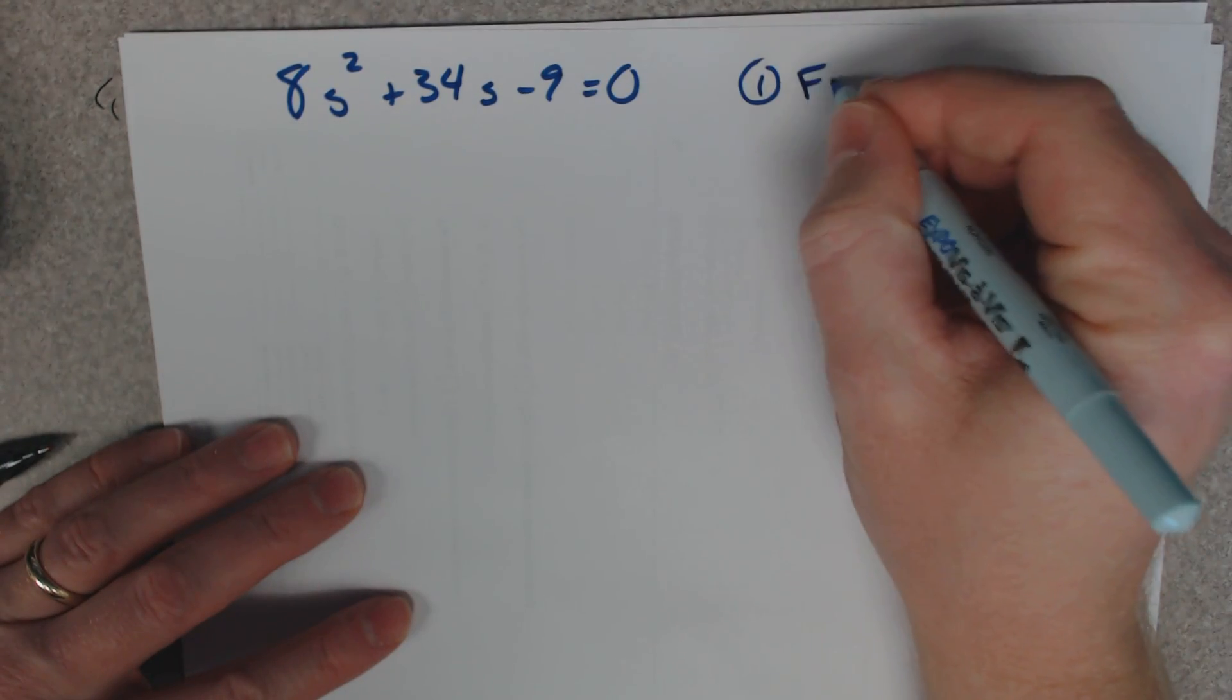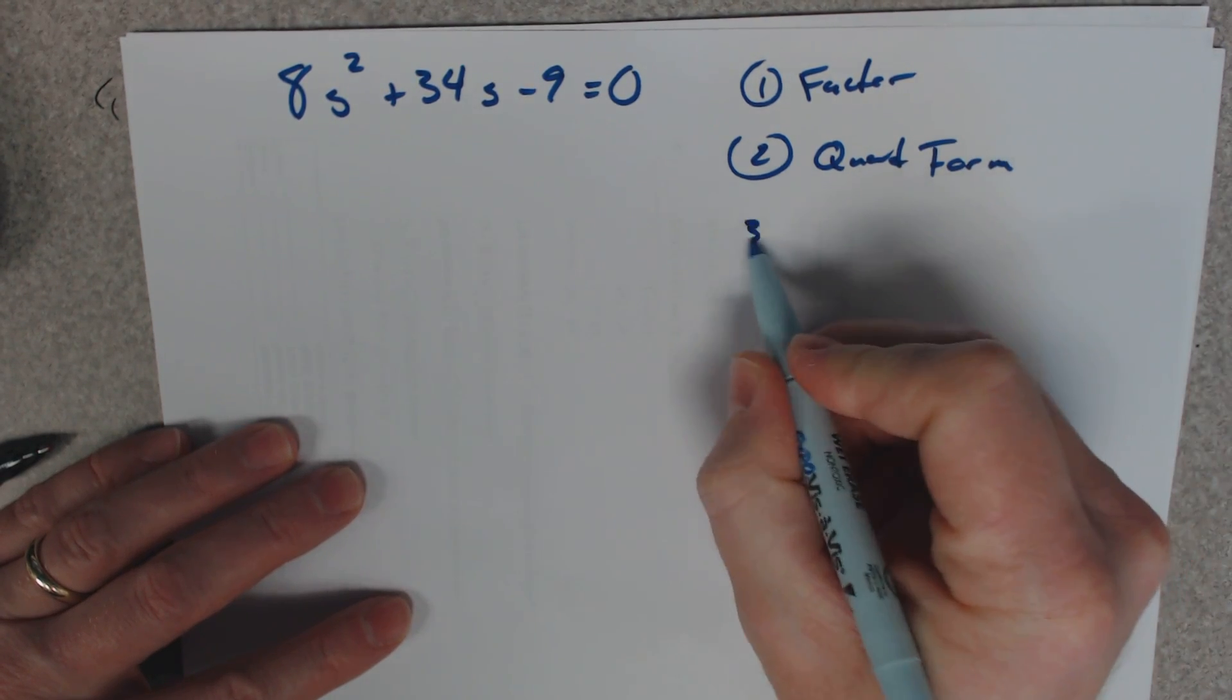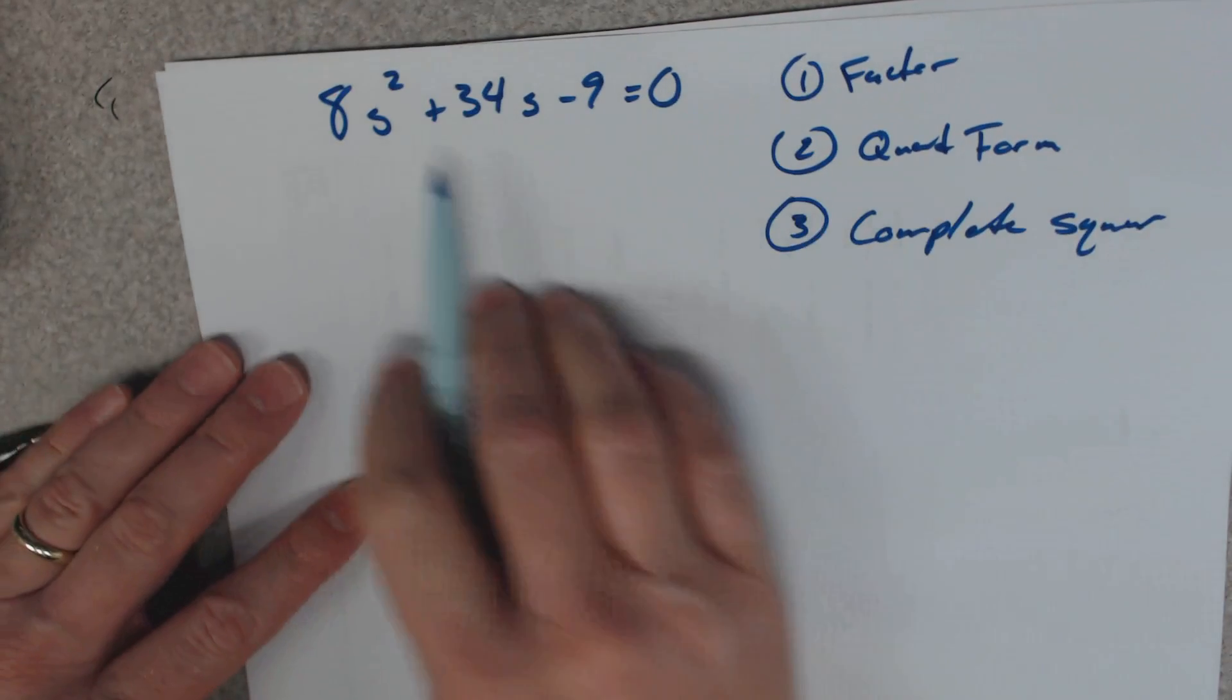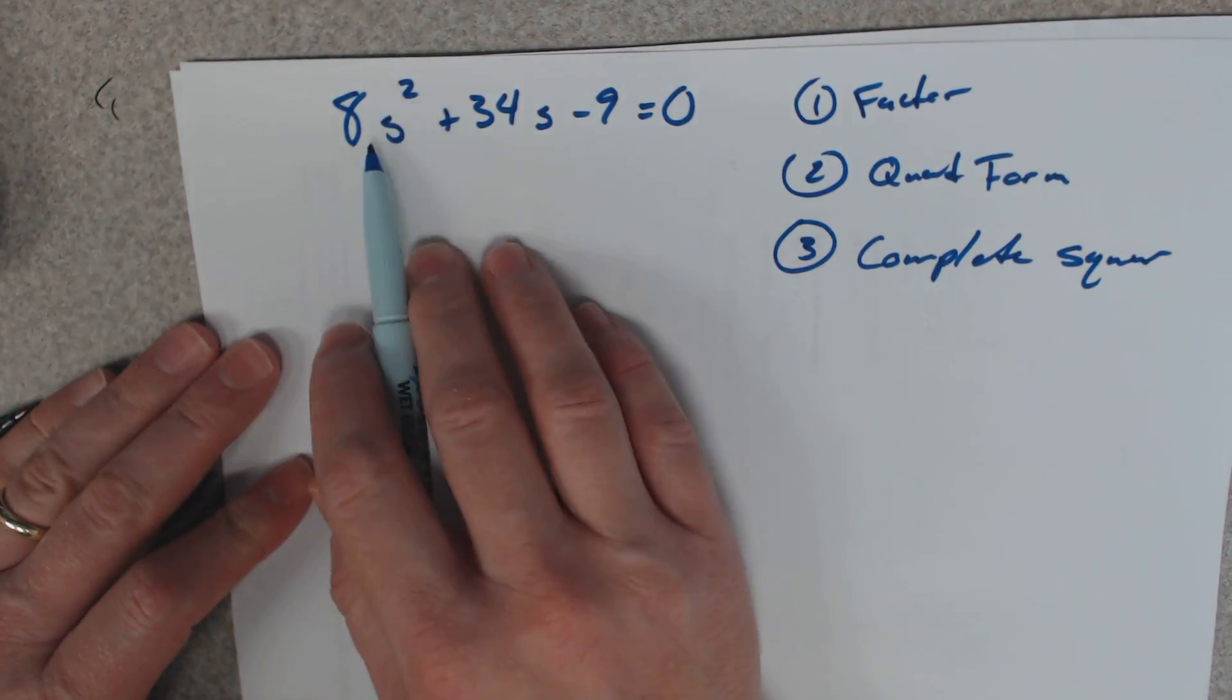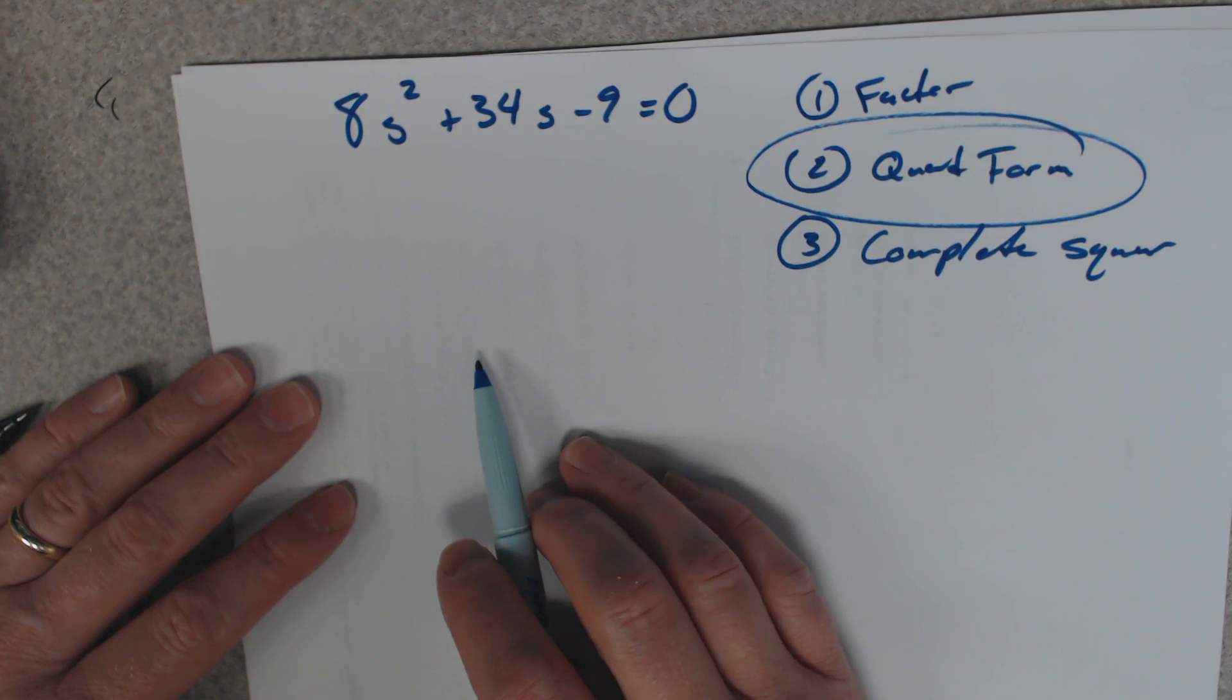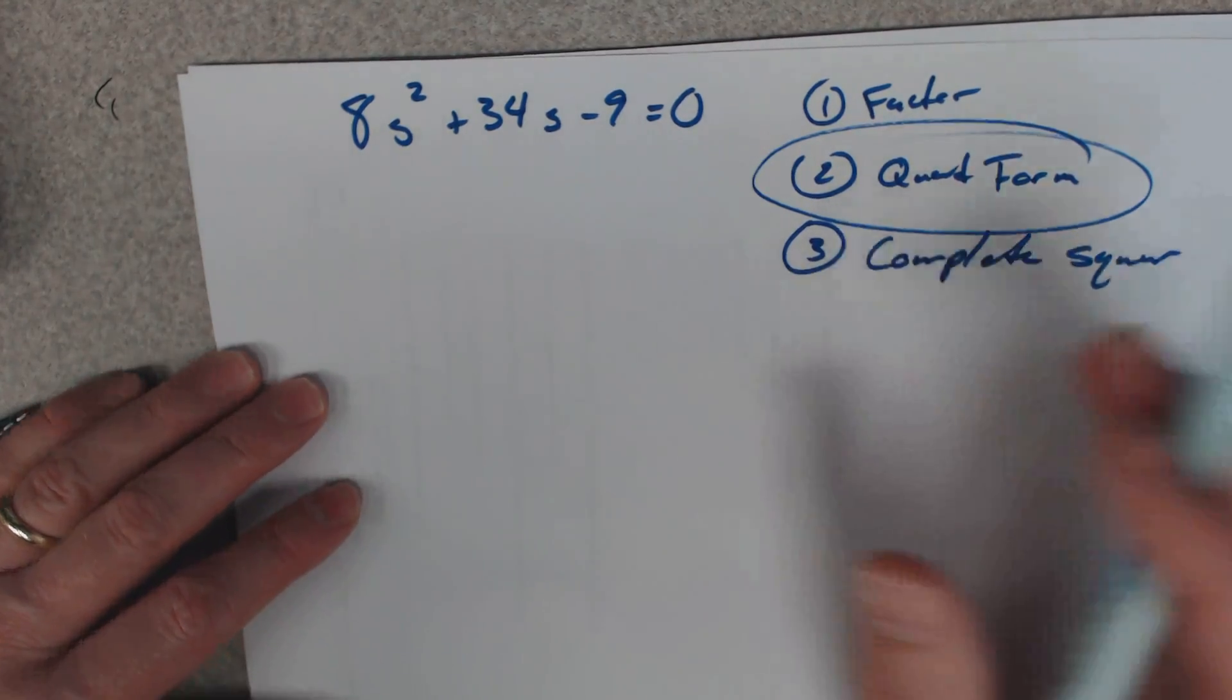One is to factor. Two is the quadratic formula. And three you can complete the square. For me, whenever I see there's a value out here in front of the x squared or the variable squared, I just jump straight to this quadratic formula. I don't fully try to complete the square or factor. I found that I can do the quadratic formula just as quick as I can factor.